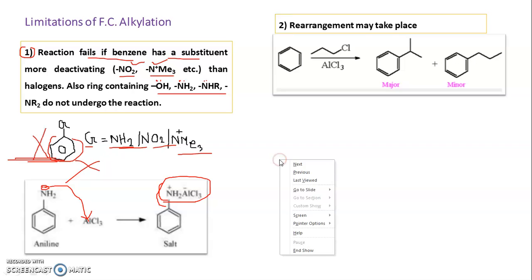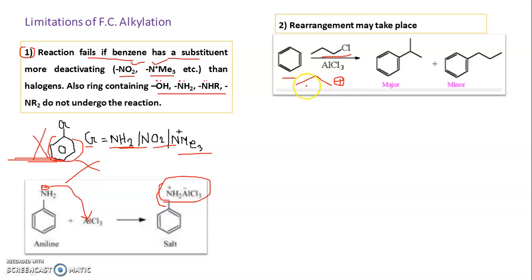The second limitation is rearrangement. Starting from propyl chloride and benzene, the initial carbocation is primary (1°). A hydride shift can generate a more stable secondary (2°) carbocation. This rearranged carbocation then reacts with benzene, giving isopropylbenzene as the major product instead of the desired propylbenzene. So when there is a possibility of rearrangement, the expected product may not be obtained.